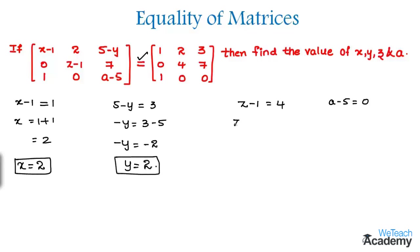And then here we get z equal to 4 plus 1. And then by adding we get the value of z as 5. So this is the value. And then by transferring 5 we get the value of a. So we get a equal to 5.